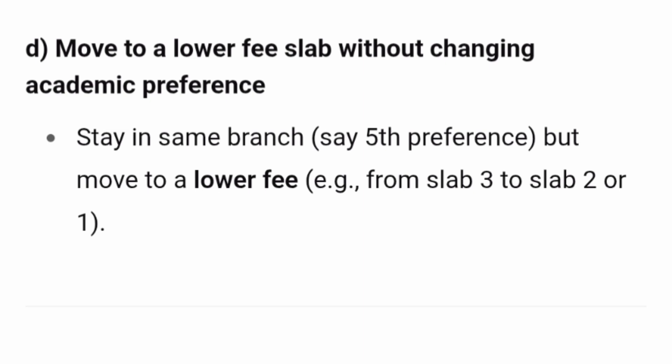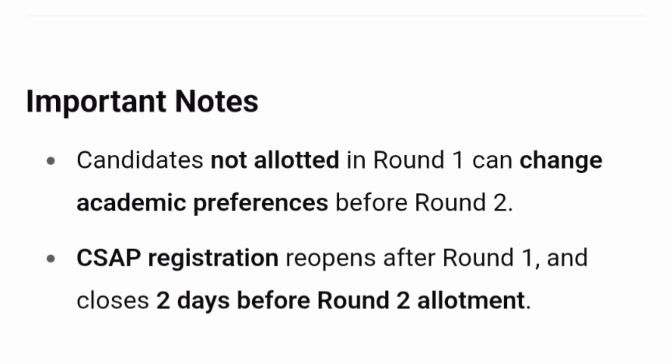Type D: Move to a lower fee slab without changing the academic preference. The student is happy with the branch they were allotted — say, 5th preference — but wants to reduce the fee. For example, upgrading from slab 3 to slab 2, and ultimately to slab 1, without changing the branch. These are all the different types of upgrades available in Amrita University.